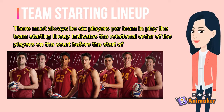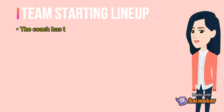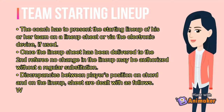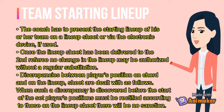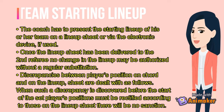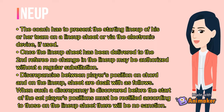Team starting line-up. There must always be 6 players per team in play. The team starting line-up indicates the rotational order of the players on the court before the start of each set. The coach has to present the starting line-up on a line-up sheet or via electronic device. Once the line-up sheet has been delivered to the second referee, no change in the line-up may be authorized without a regular substitution. Discrepancies between players' positions on the court and on the line-up sheet are dealt with as follows: when such a discrepancy is discovered before the start of the set, players' positions must be rectified according to those on the line-up sheet, and there will be no sanction.